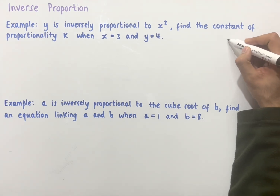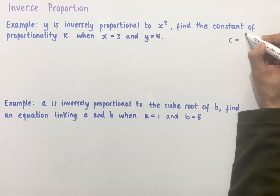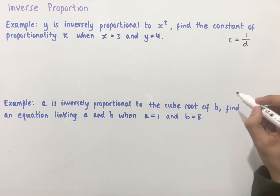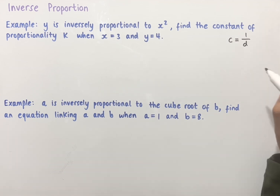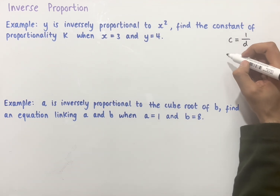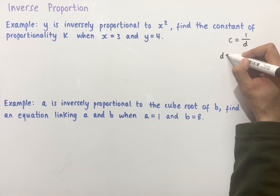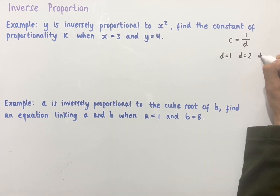For example, if we had an equation that linked two variables c and d in the following way, where c equals 1 over d, then the idea is that if we were to substitute values in for d into this equation, as d gets bigger, c should get smaller. So if we try some values — d equals 1, d equals 2, and d equals 3.